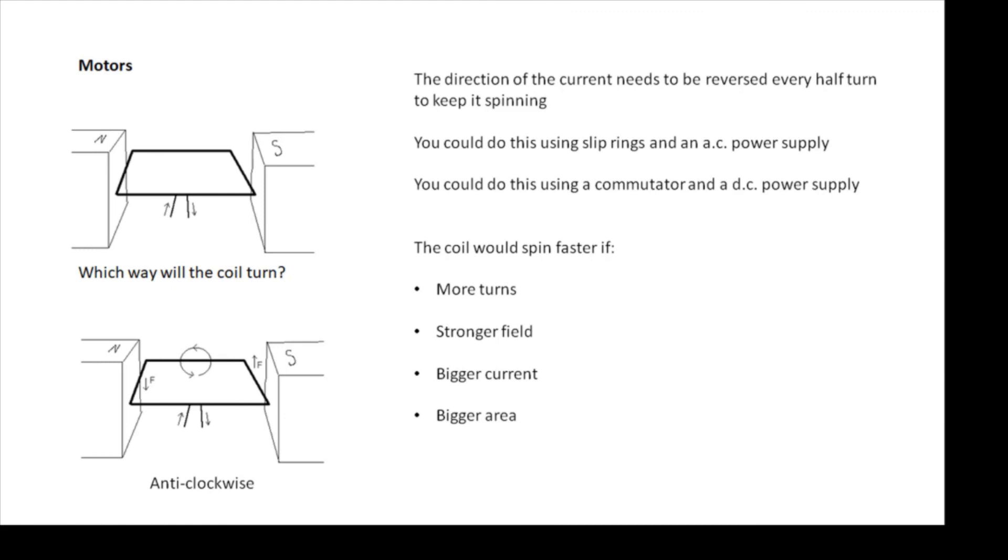The coil would spin faster if you had more turns, a stronger field, a bigger current, and a bigger area of the coil. And you can explain all of them from F equals BIL.